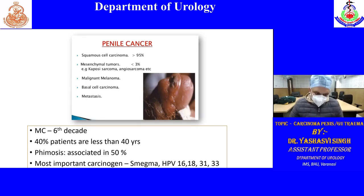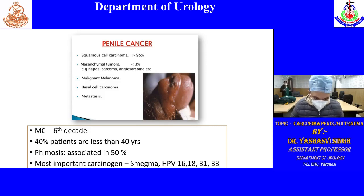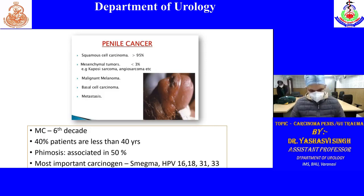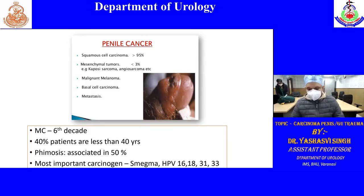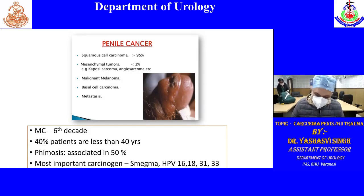CA penis most commonly presents in the sixth decade, but 40% of patients are less than 40 years. Phimosis is associated in 50% of cases. The etiology, as you know, is HPV 16, 18, 31, 33 — most commonly HPV 16 is asked in questions.